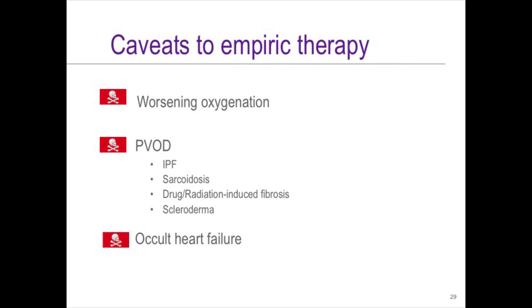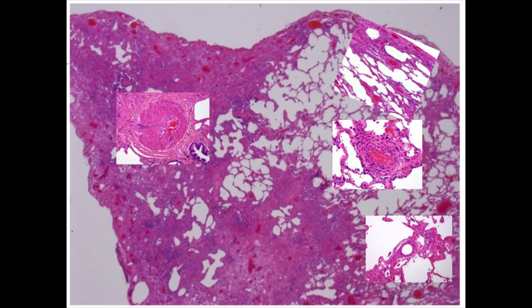Caveats to empiric therapy: worsening oxygenation, VQ mismatch, PVOD, and you might be dealing with patients who have occult heart failure — in which case you might make them worse. Now for the pro argument. This is the lung biopsy of a patient with IPF — you can see a lot of subpleural fibrosis and blood vessels that are obliterated and fibrotic. I don't think any of us believe we're going to impact these vessels with our medications. But in areas that are relatively well preserved — which characterizes IPF — there are also vasculopathic changes. The parallel is to CTEPH, where we don't treat the mechanical obstruction or strictures, but we treat the small vessel vasculopathy that occurs in areas of the quote-unquote normal lung.